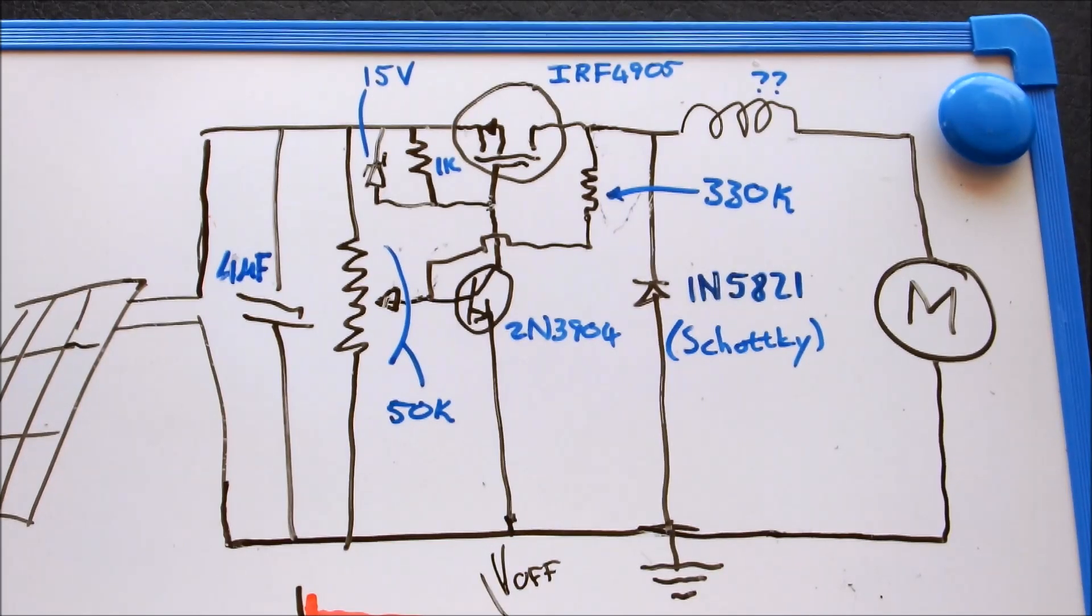These are the component values then. The only component that I don't have the value for is the inductor. I scavenged that from an old buck converter.